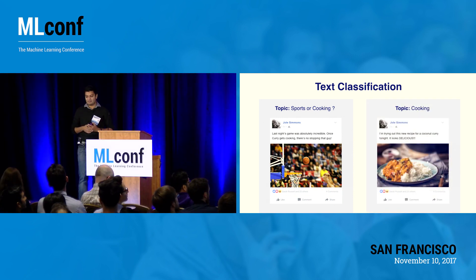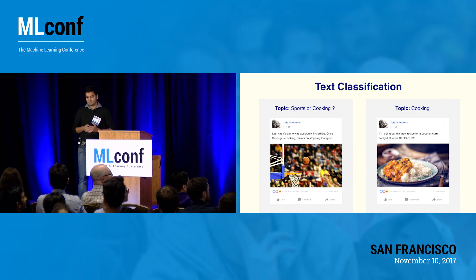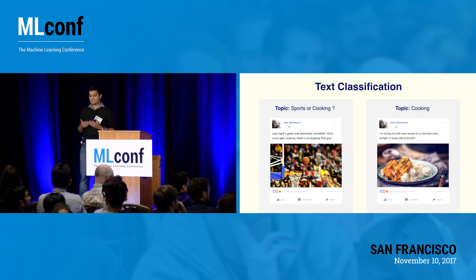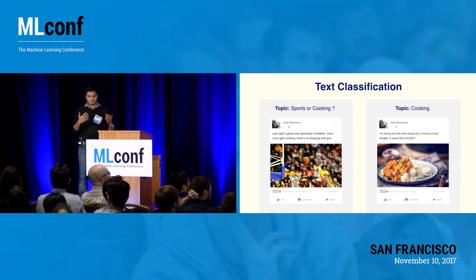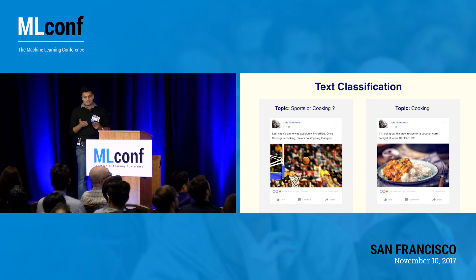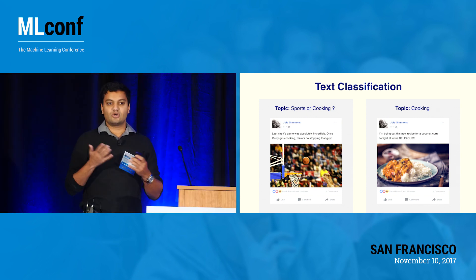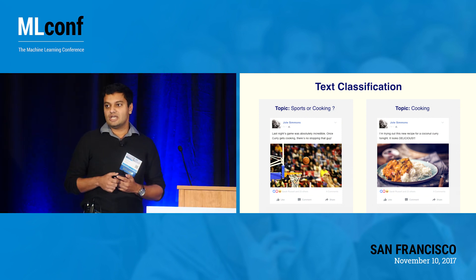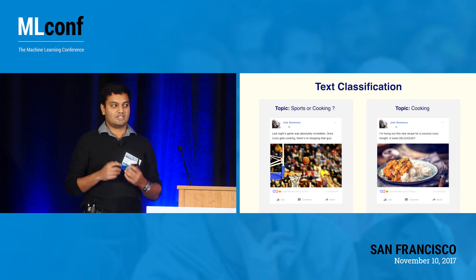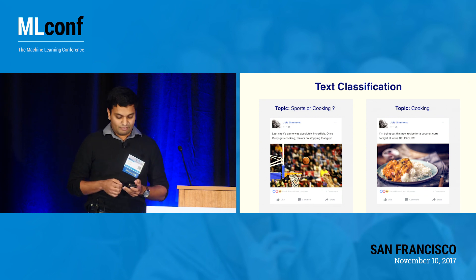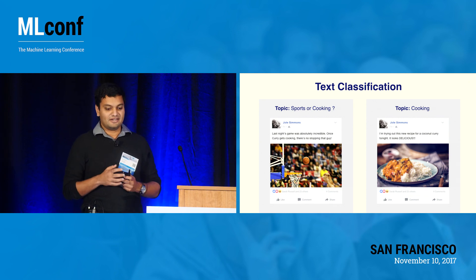Here's an example — this actually happened. In the right pane, it's very clear that the topic is cooking. In the left pane, to all of us it's very clear that the topic is sports. But our models thought the topic was cooking, and so when Joel made that post, he saw a bunch of cooking-related posts after that, which is probably not the behavior he had in mind.